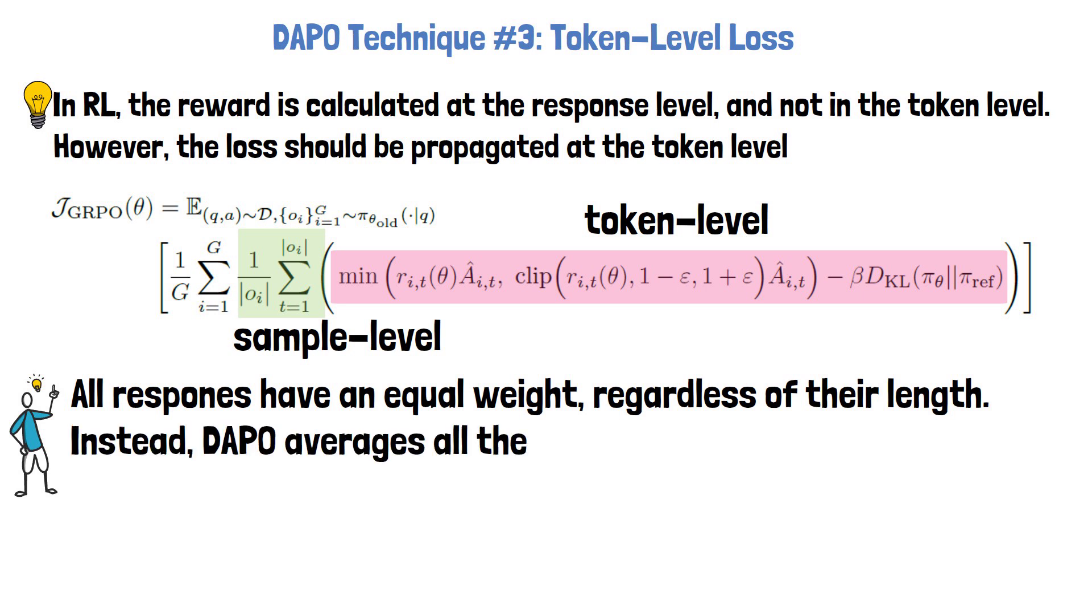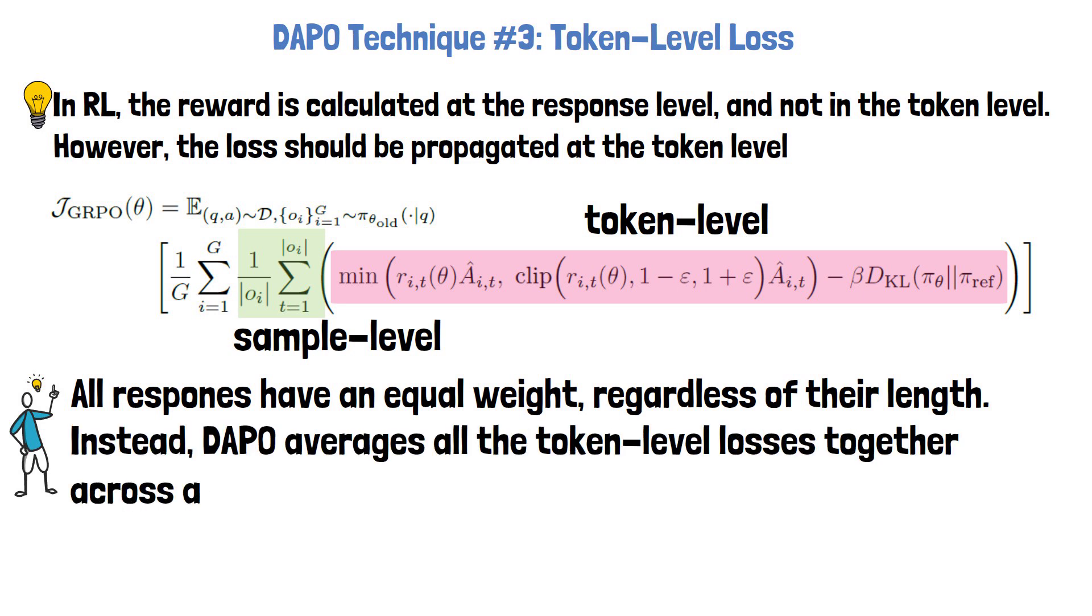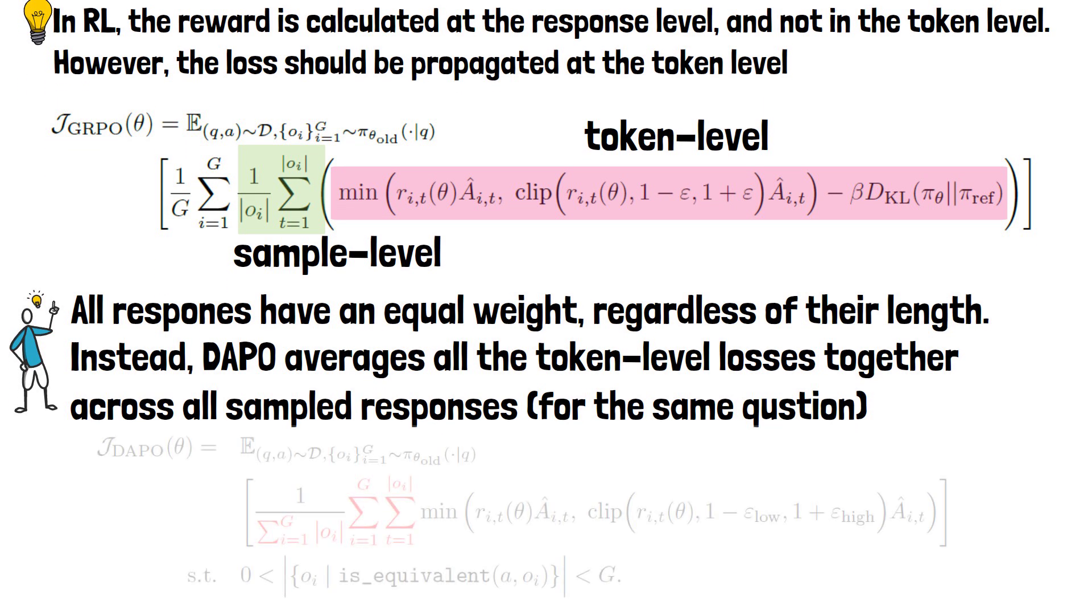DAPO addresses this by averaging all the token level losses for all sample responses of the same input together. This is achieved with a small change to the GRPO objective function, moving the division by the response length to the end of the loss calculation, as we can see highlighted in red.